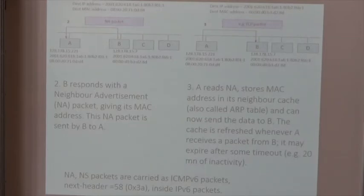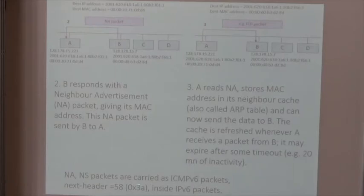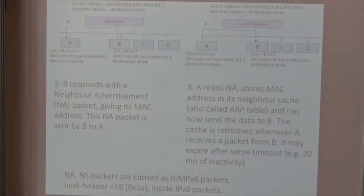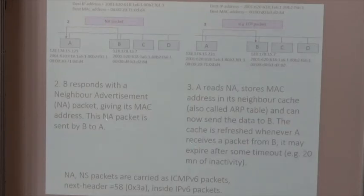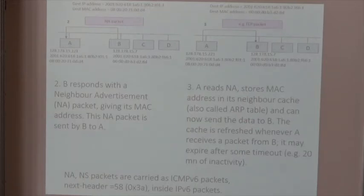The NDP — network discovery protocol — packets, including network advertisement and neighbor solicitation packets, are carried as ICMP packets. ICMP stands for Internet Control Messaging Protocol. It is a protocol that sits directly in IP packets — so it doesn't use TCP or UDP. It is used for management of the IP layer itself. For example, if you try to reach a machine that is not reachable, some routers might respond with an ICMP error code saying 'host unreachable.'